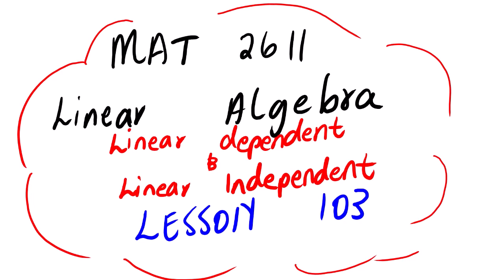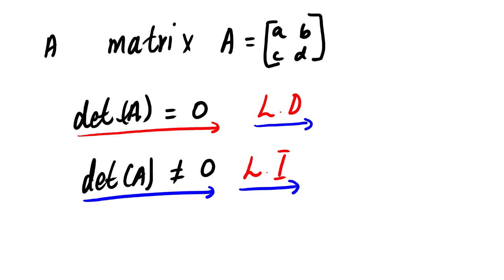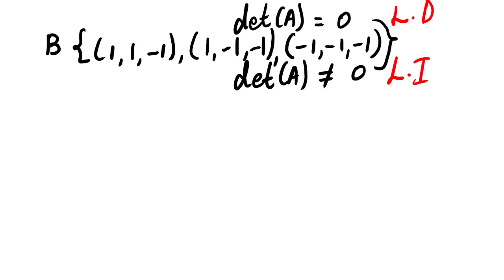Today's lesson is Mathematics 2611, Linear Algebra. We are going to look at linear dependence and linear independence — this is lesson 103. Suppose we have two or more vectors; those vectors construct a matrix A. We check the determinant of that matrix. If the determinant equals zero, the vectors are linearly dependent. If the determinant is any number besides zero, the vectors are linearly independent.